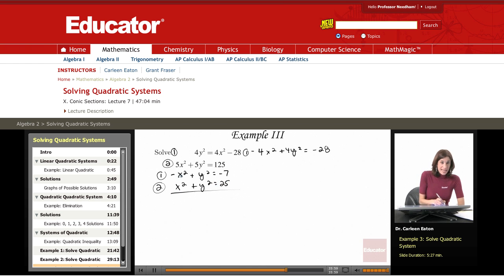Now, all I have to do is add these two together because I have a negative 1 for a coefficient here and a 1 here. These cancel out. Y squared plus y squared is 2y squared. 25 minus 7 is 18.